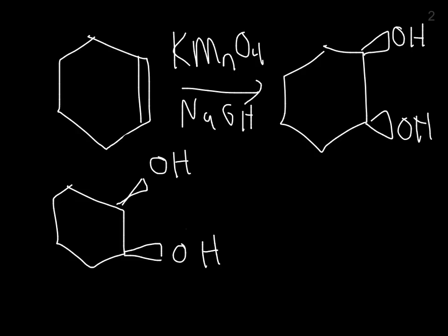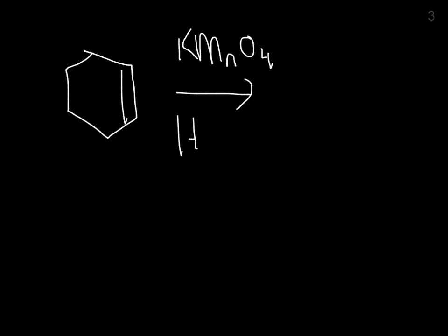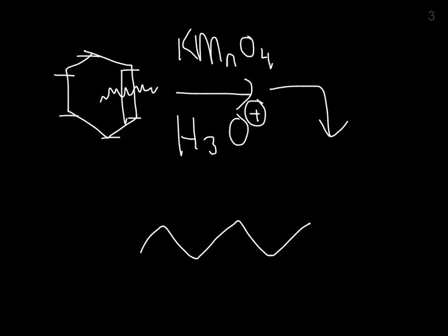The next one is oxidative cleavage. So a template reaction would look something like this. Once again, cyclohexene. And if you do KMnO4 in acid, so where the base in the last one reduces its oxidative potential, the acid actually heightens it. And basically the KMnO4 just goes in and completely cleaves that double bond. So you have 1 carbon, 2 carbon, 3 carbon, 4 carbon, 5 carbon, 6 carbon. So 1, 2, 3, 4, 5, 6.